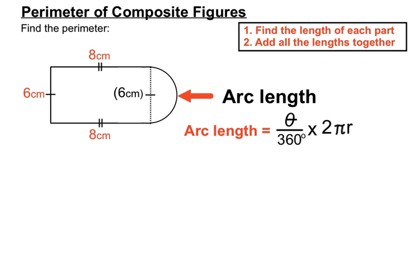Thankfully we have a formula for that, which we saw in a previous video. Our arc length formula is: theta over 360, multiplied by 2 times pi times the radius of that arc. The theta is the angle at the centre of our arc, and theta/360 represents the fraction of a full circle that we have. You'll recognise 2πr as the circumference formula.